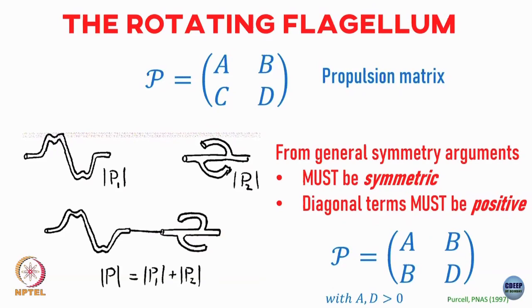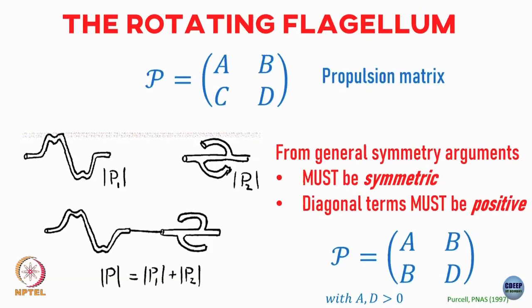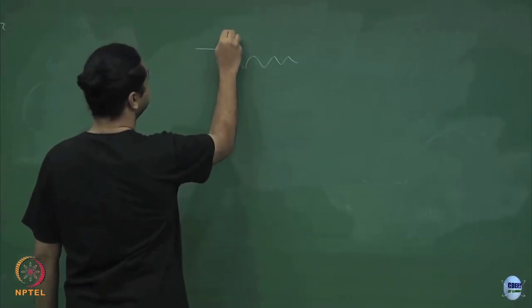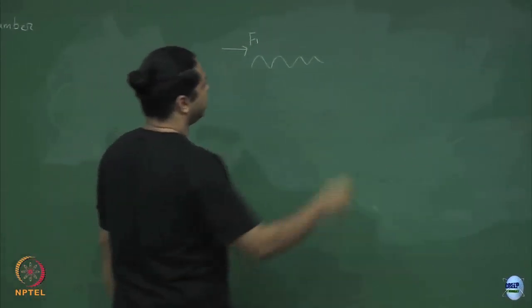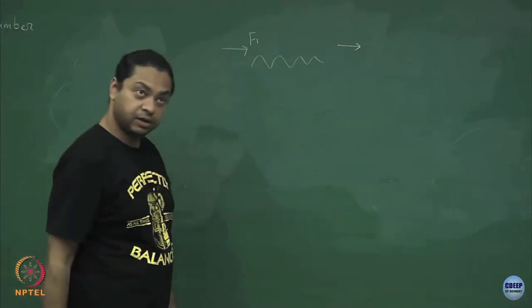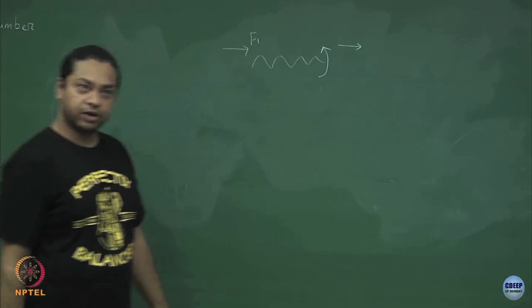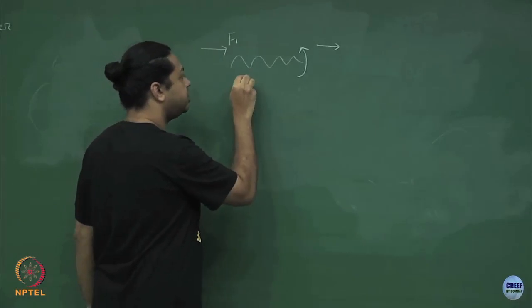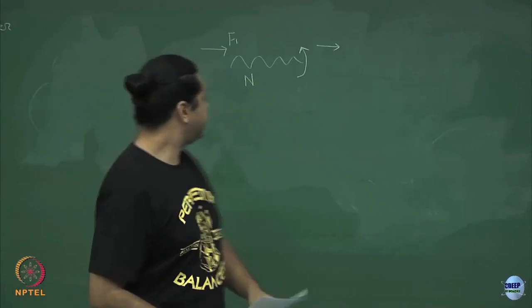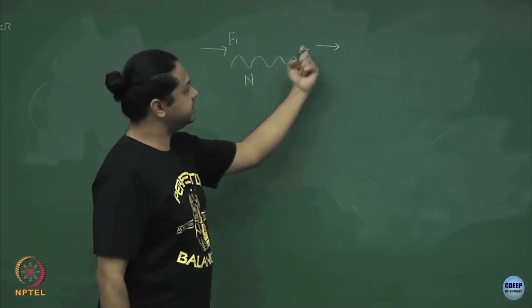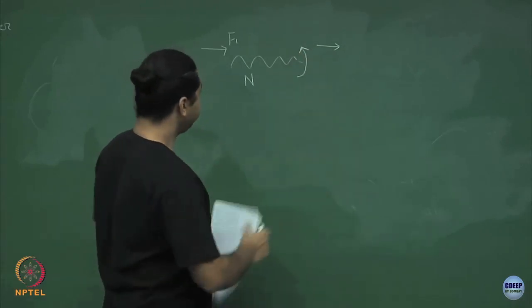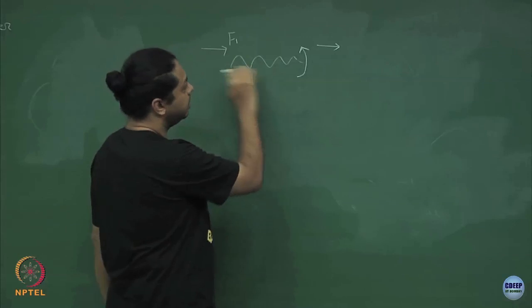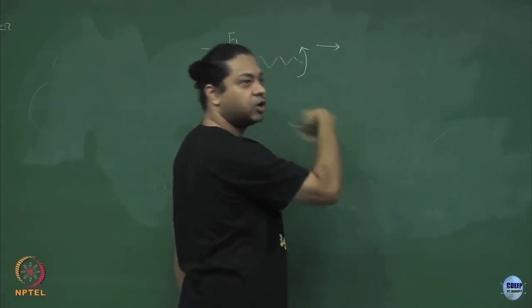So very generally, for any sort of swimmer — not necessarily a corkscrew — the propulsion matrix can be written in the form [a, b; b, d], a symmetric matrix with a and d greater than 0. I will try to show this. Let us say I have a propeller and I apply a force f1 on it. This is going to cause it to move with some velocity and rotate with some angular velocity.